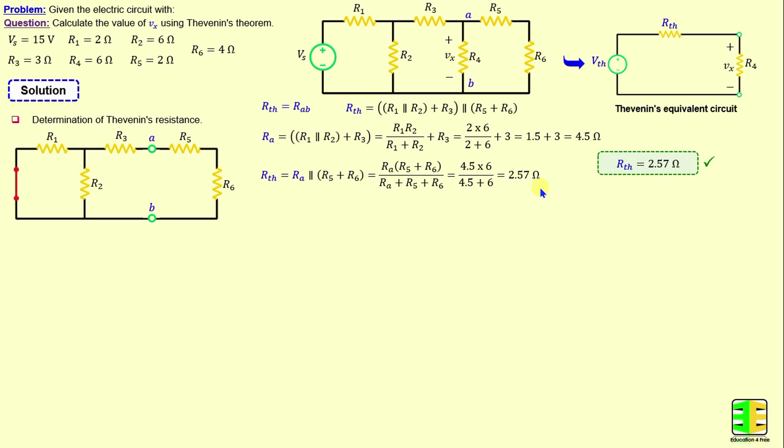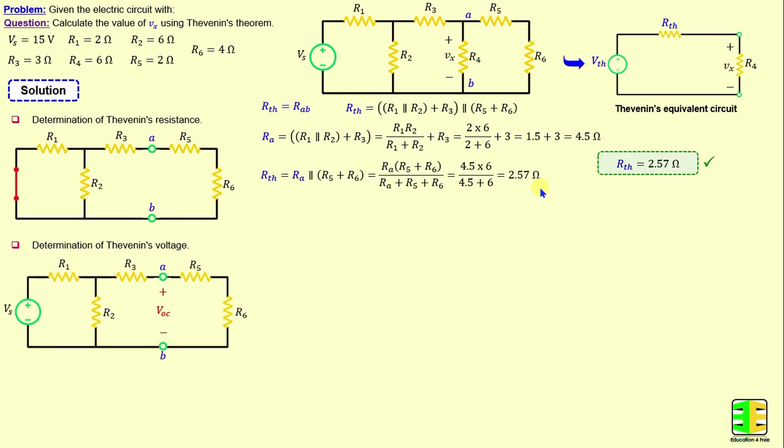After determining the Thevenin resistance, we proceed to calculate the Thevenin voltage. The Thevenin voltage is the open circuit voltage between terminals A and B when R4 is disconnected, so Vth = Voc.